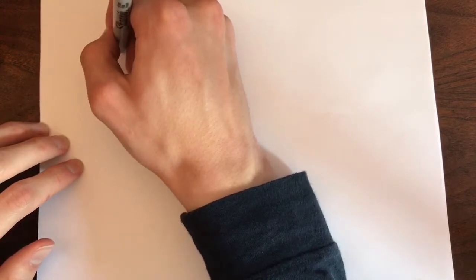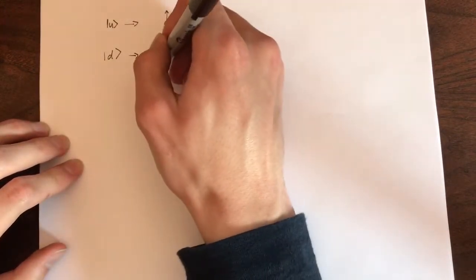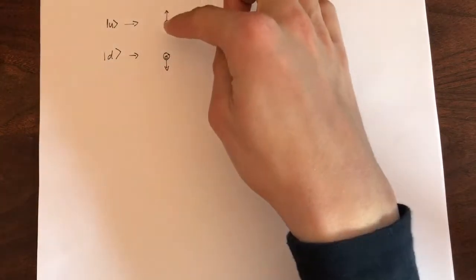Our second basis state will be the down position. So it would look like this. Now, this is already normalized as well. But how do we know it's orthogonal to the up one, just like it has to be for the axes to be perpendicular?